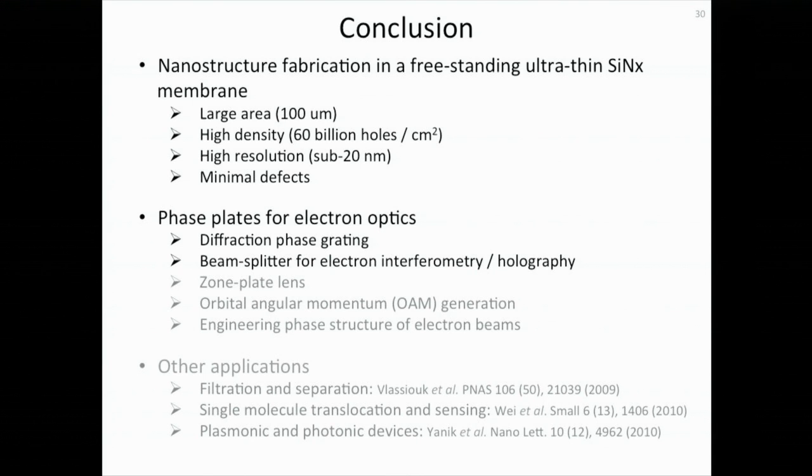To conclude, we fabricated nanostructures in a freestanding, ultra-thin silicon nitride membrane with large area, high density, high resolution, and minimal number of defects. We demonstrated these fabricated nanostructures or nanogratings can be used in electron optics as a diffractive phase grating, and as a beam splitter by using the SEM diffractive imaging. We also point out that it could be used for other applications in electron optics, such as a zone plate lens or to shape the electron beams. There are many other applications besides electron optics that can benefit from exactly the same structures. These applications range from single molecule filtration, separation, and sensing to plasmonic and photonic devices.